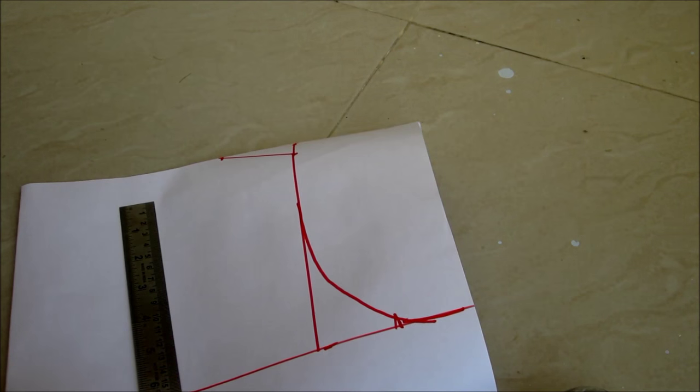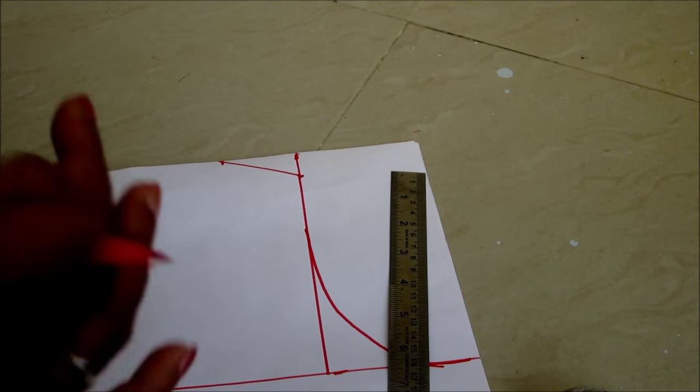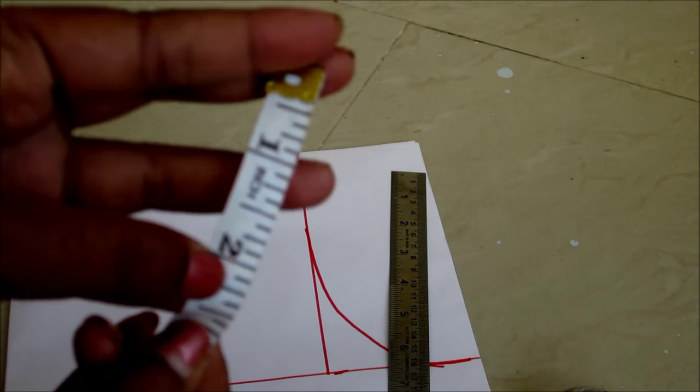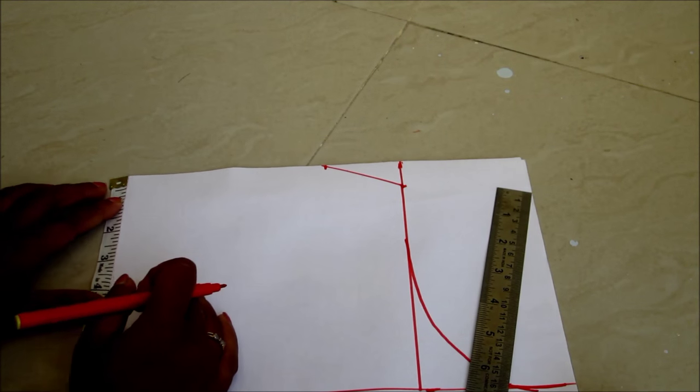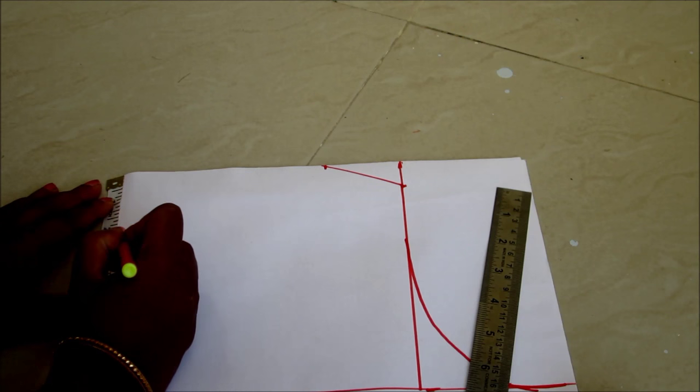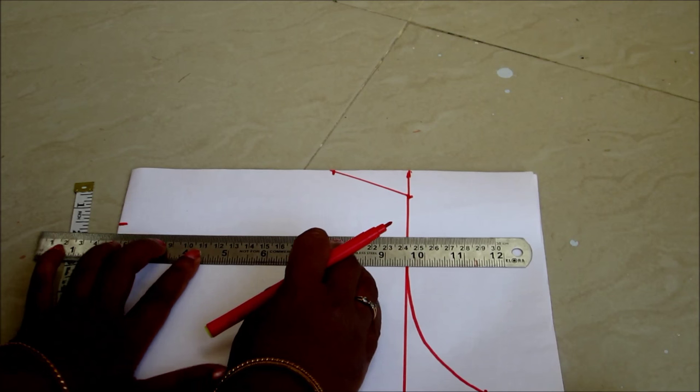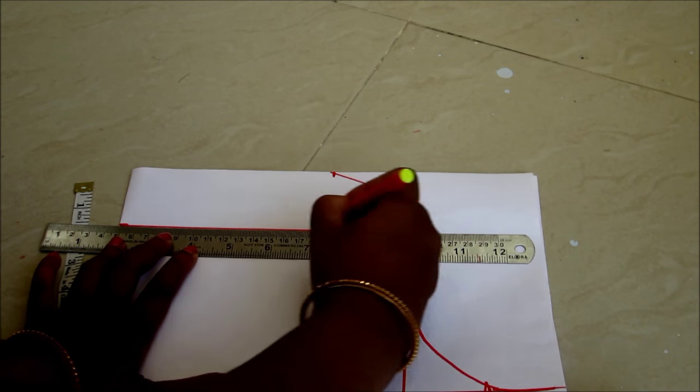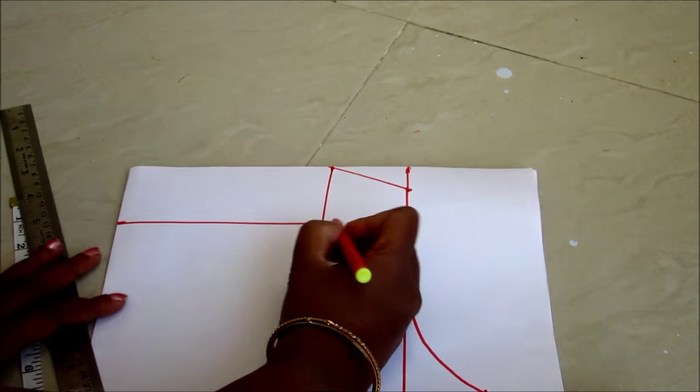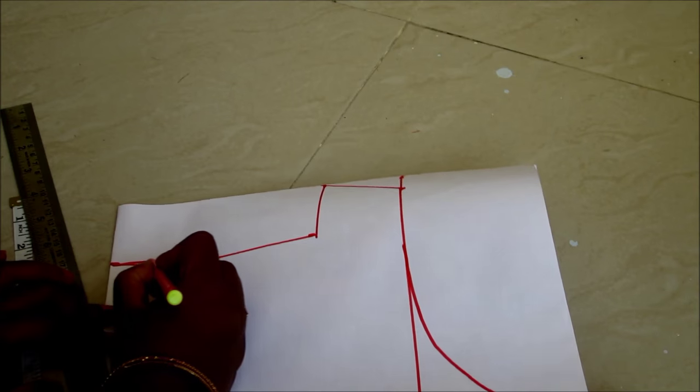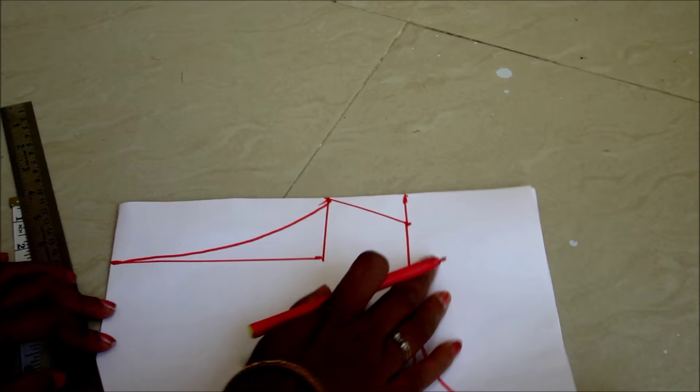Now I would be marking the neckline for the boat neck. The minimum is 1.5 inches to maximum 3 inches. So here I am marking 2 inches. Draw a straight line joining the 2 inches to the shoulder line, and I am drawing with the free hand a small little curve.